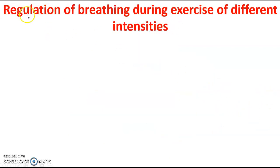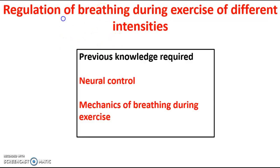The specification looks like this. It asks you to be able to have an understanding of the regulation of breathing during exercise of different intensities. So regulation with regard to breathing, we have to focus on neural control — that is our focus. And the key knowledge you need in order to be successful in this part of the specification is you must have a knowledge of neural control in general.